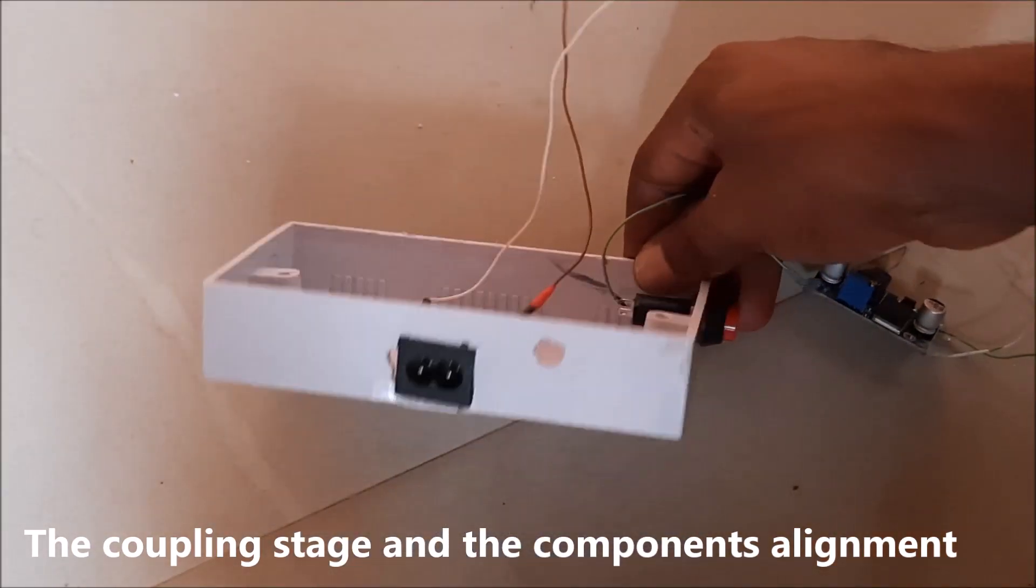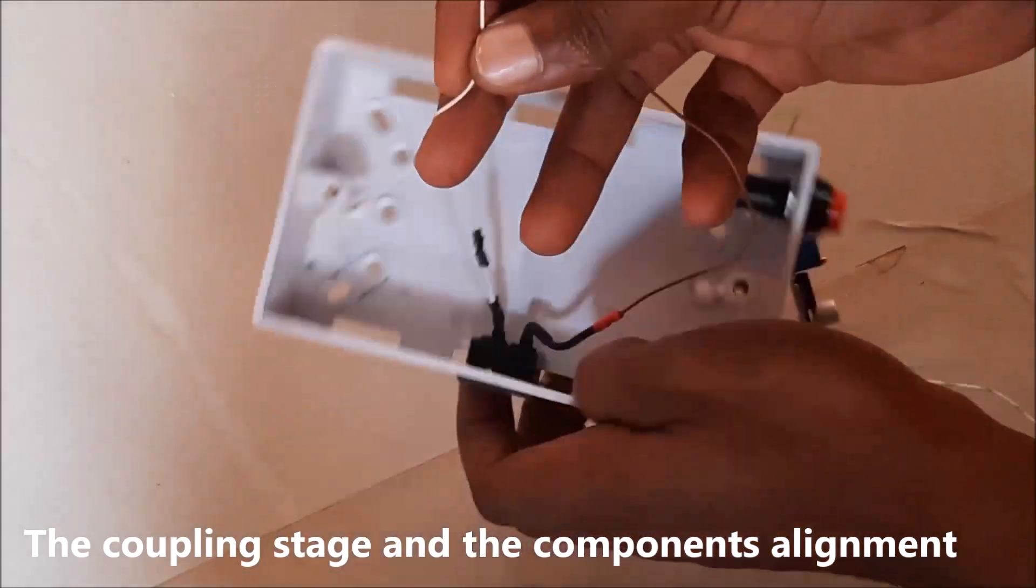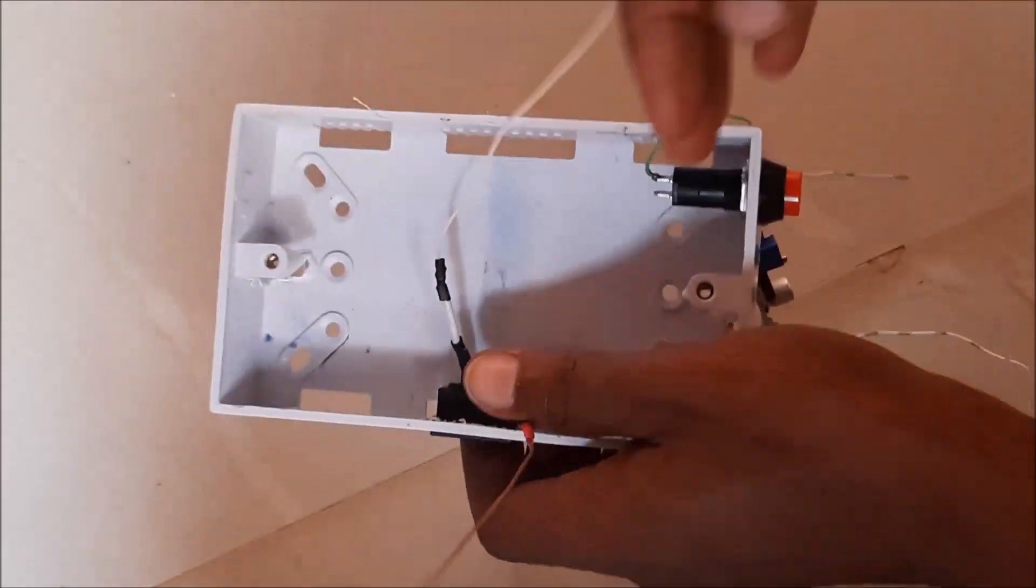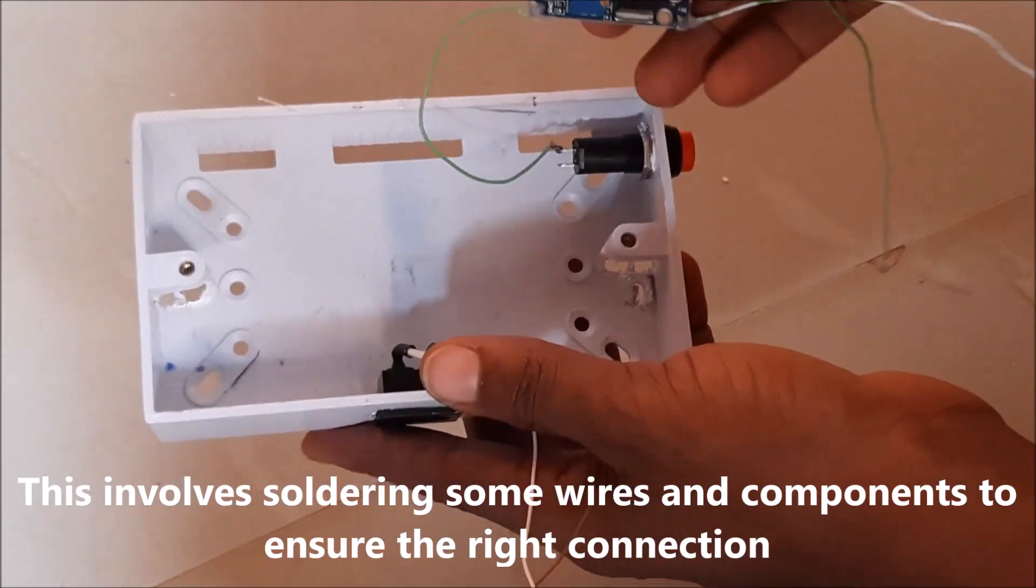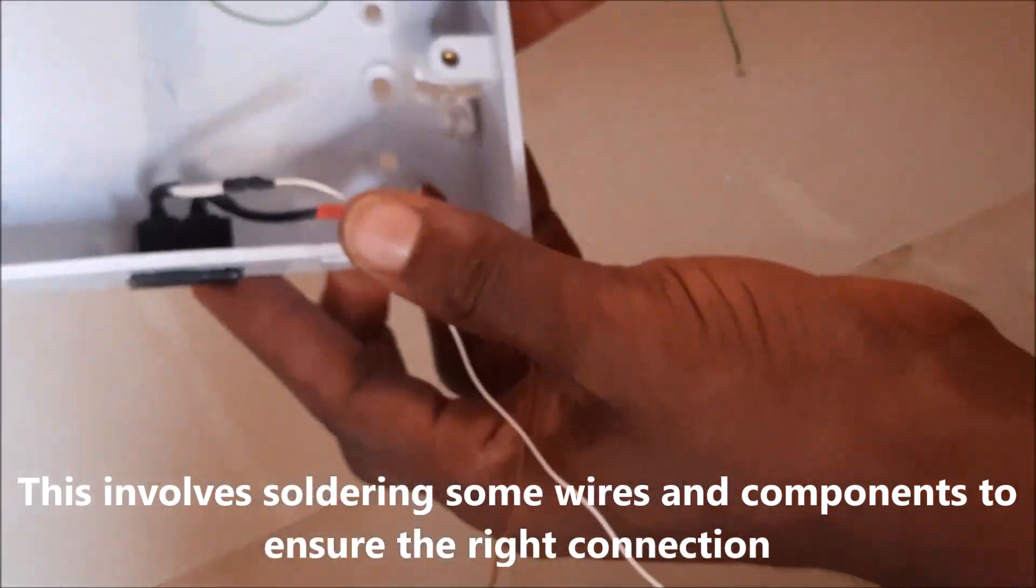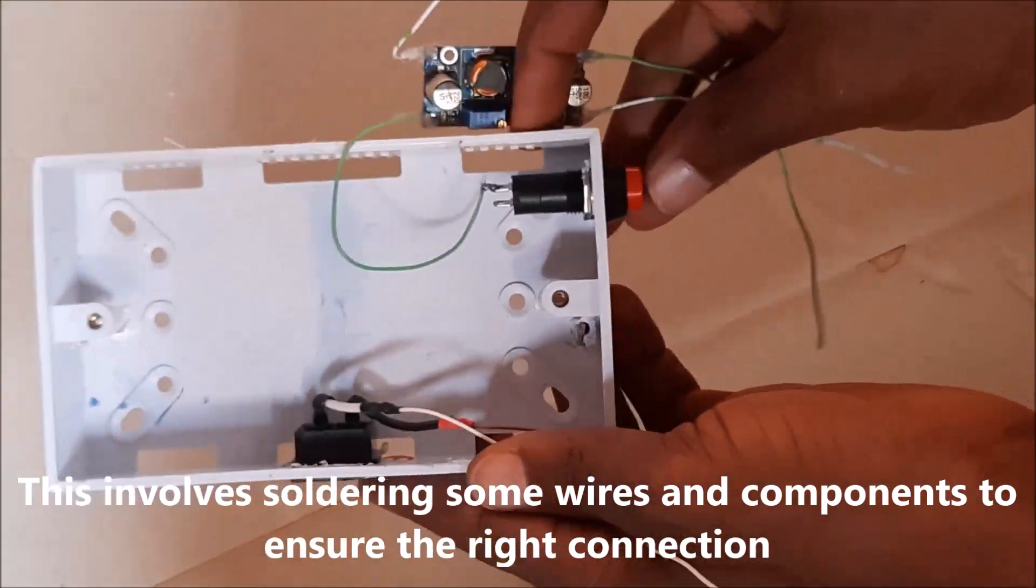Now, let us move to the coupling and assembling of the parts together. This involves the soldering of some wires and components to ensure the right connections.